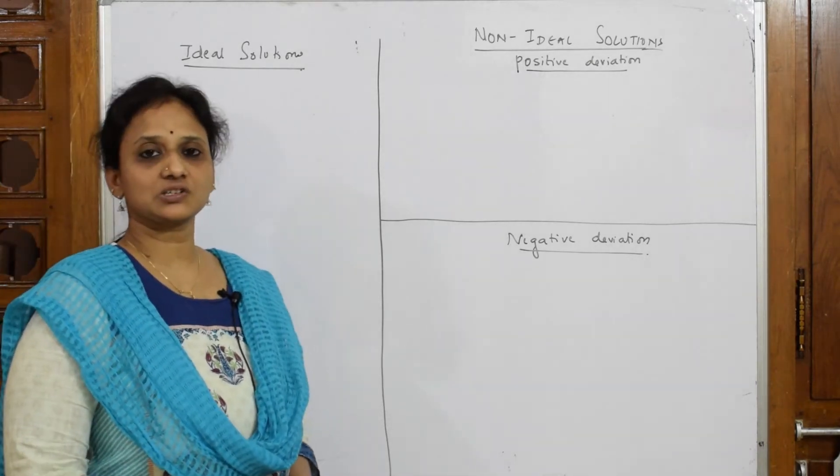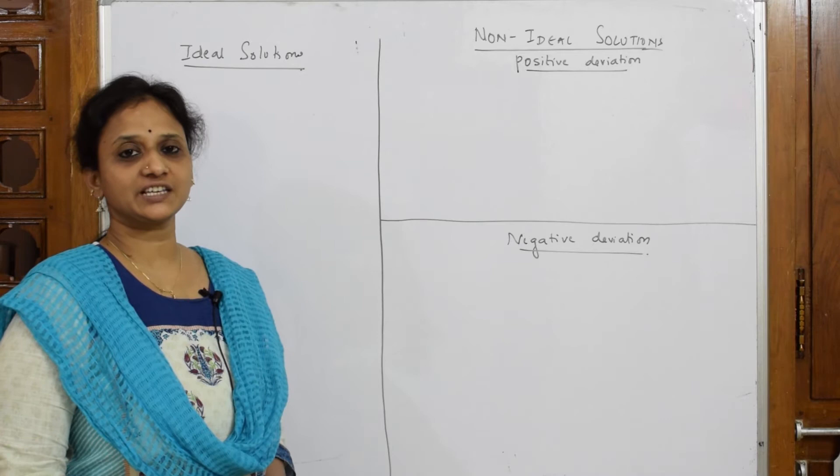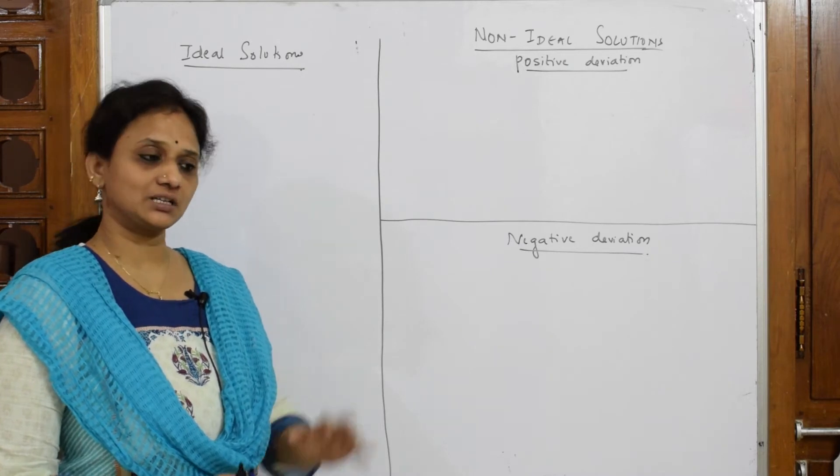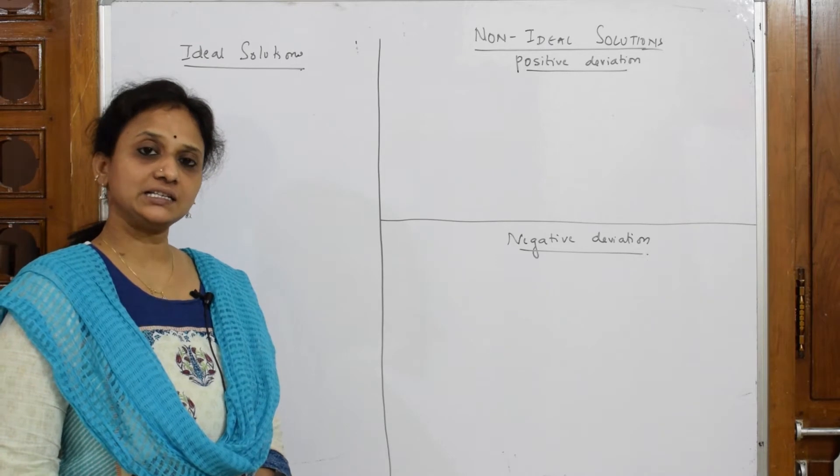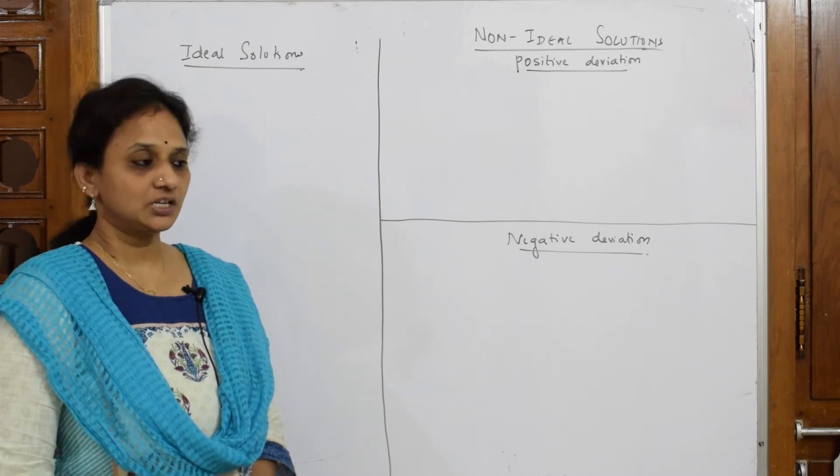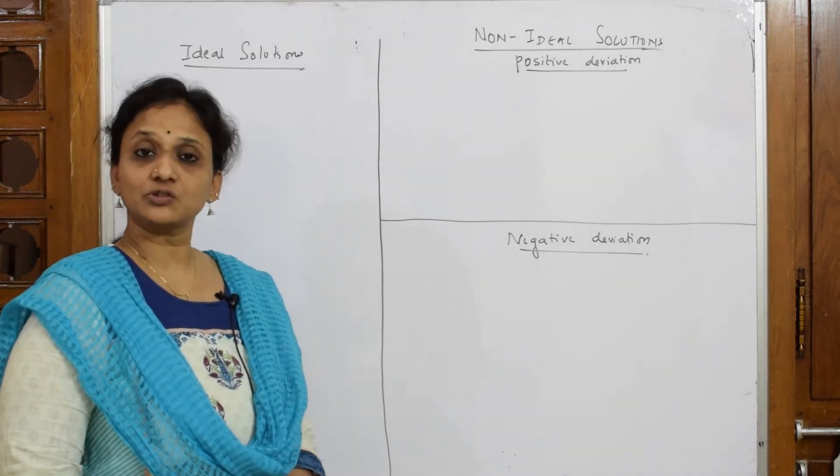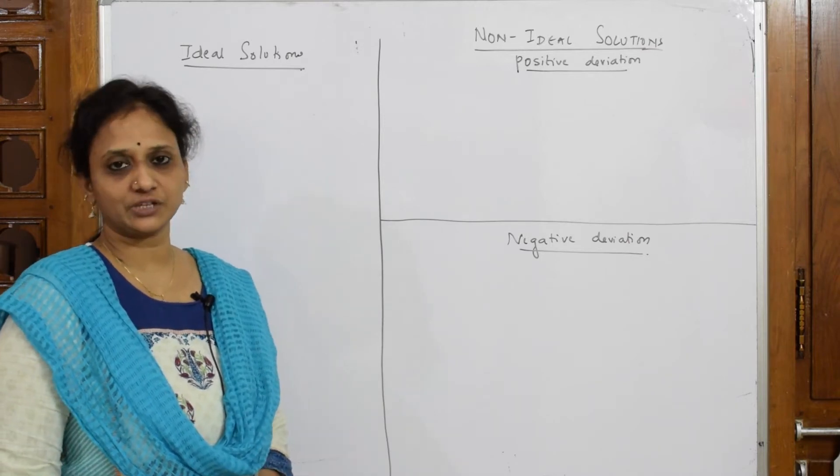We have already learned Raoult's law. Then I went into a concept where I said if the solute and the solvent, that is both liquids are volatile, then I went into a concept called ideal solutions and non-ideal solutions. I already gave the differences and explained with certain examples.